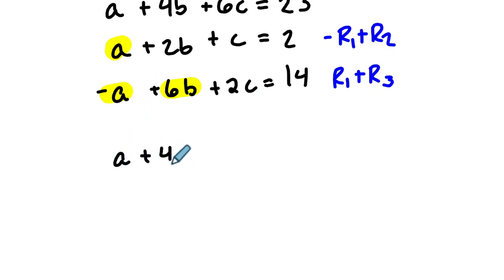So first row is unchanged. Negative A plus A is 0. You've zeroed out. Negative 4B plus 2B is negative 2B. Negative 6C plus C is negative 5C. And negative 23 plus 2 is negative 21.